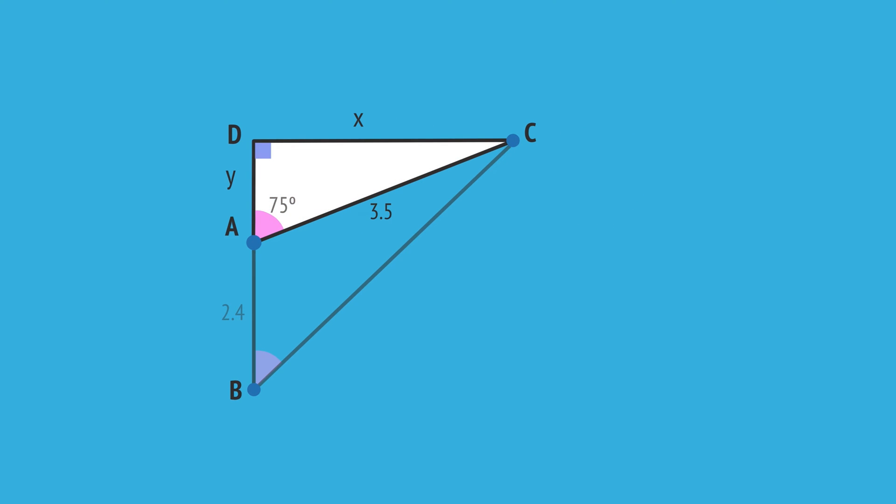Using triangle ADC, we write the sine ratio for 75 degrees, which equals the opposite, x, over the hypotenuse, 3.5. Rearranging for x and using a calculator gives us x equals 3.38 kilometers.